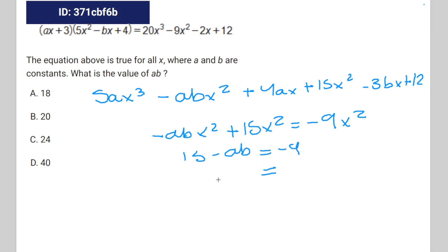Subtract 15 from both sides. You're going to get -ab = -24. Therefore, ab = 24.